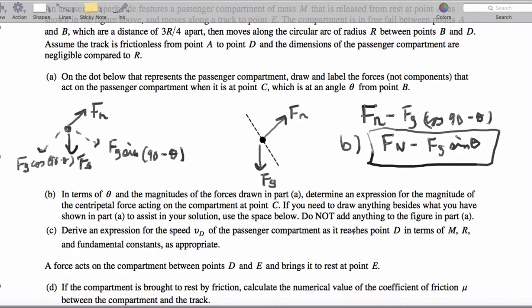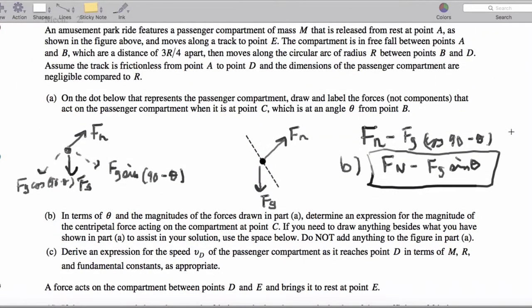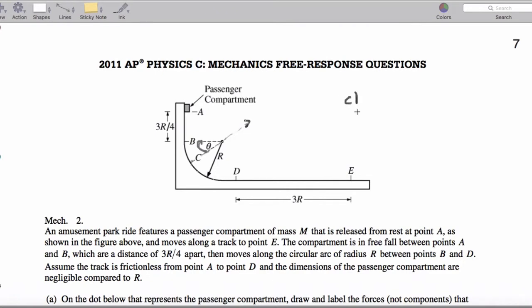Now, it says derive an expression for the speed as we reach the bottom. That's just going to be conservation of energy. So, I'll actually do part c up here. We're going to say that 3r over 4 plus 4r over 4 equals the height. So, we can say then that Mgh equals 1 half Mv squared. The M's cancel. So, V is going to equal 2g times 7r over 4, all of that under a square root. So, we're going to get square root of 7gr over 2 equals V.